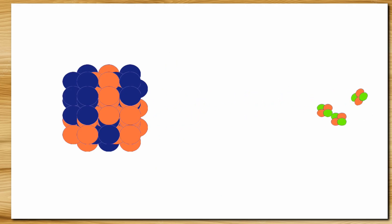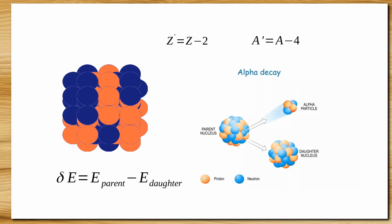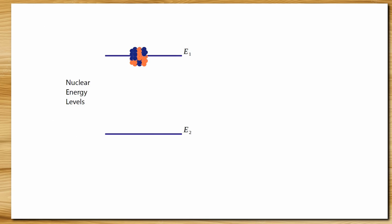This is because in alpha decay, one nucleus is giving up two neutrons and two protons. Therefore its atomic number is decreased by 2 and mass number is by 4. So energy of alpha particle is simply the difference between rest mass energies of the two nuclei. Similar case is for gamma emission. Its energy is equal to the energy difference of two nuclear energy levels.